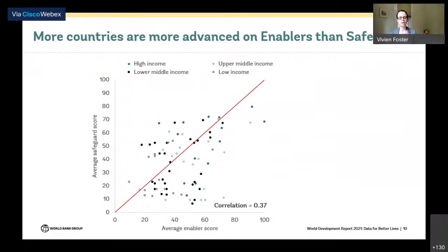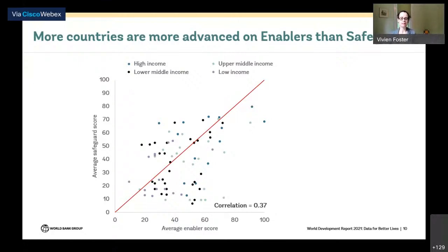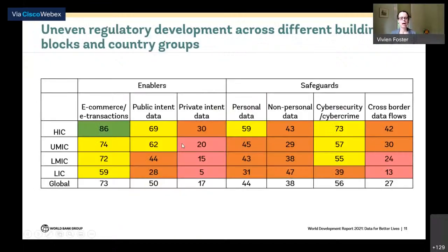Plotting average safeguard scores on the vertical axis against average enabler scores on the horizontal axis, the correlation between them is rather low at 0.37, suggesting countries don't necessarily give simultaneous or balanced consideration to both aspects. Worldwide, there is a preponderance of dots under the 45-degree line, suggesting the enabling environment is a little more developed than the safeguarding environment in most countries. High-income countries generally have a little bit more of a balance.